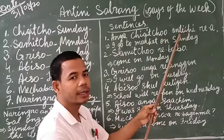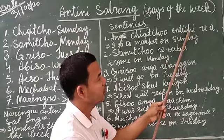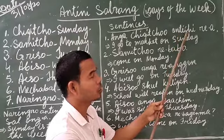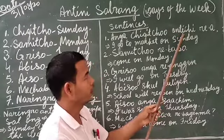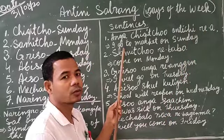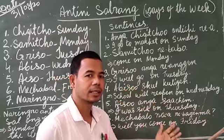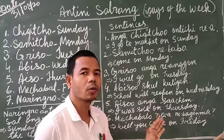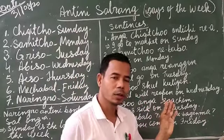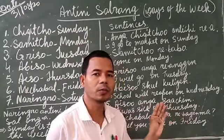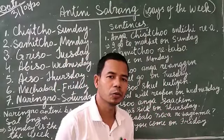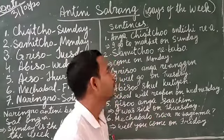Anti alone means market. When I write antichi, chi means 'to' — so antichi means 'to market.' Rea means go. So in the direct sentence: I go to market on Sunday — anga, shigucho, antichi, rea. This is the meaning.